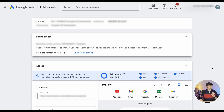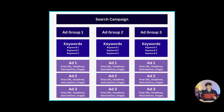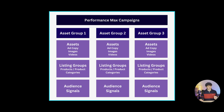First of all, let's have a look at how asset groups actually work, because the structure for Performance Max campaigns is a little different from the structure we're used to from normal search campaigns. There is not the common structure of campaign, ad group, and ad — but there is the Performance Max campaign and then there are the asset groups.